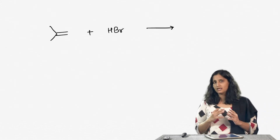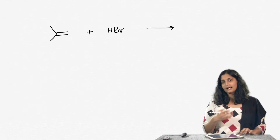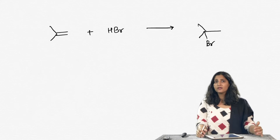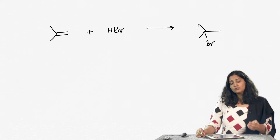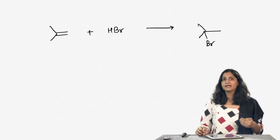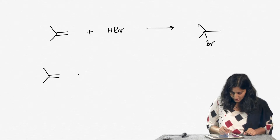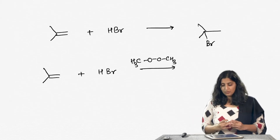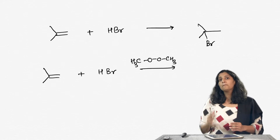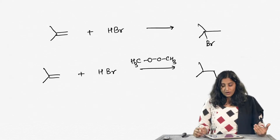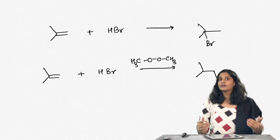Without a peroxide, the double bond of an alkene acts as a nucleophile and bromine ends up on the more substituted carbon. But if we do the same reaction — alkene with HBr — and add dimethyl peroxide, the bromine does not end up on the more substituted carbon; instead, it goes to the less substituted carbon. This is different from the earlier trend.